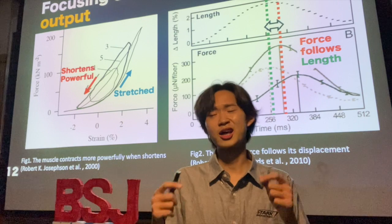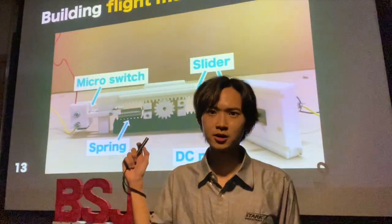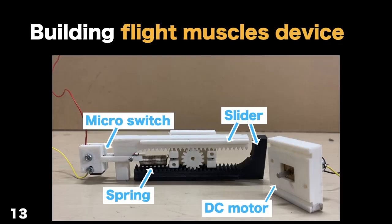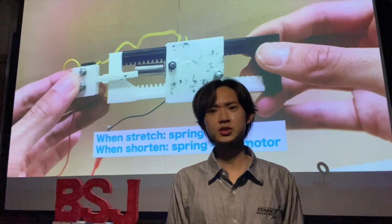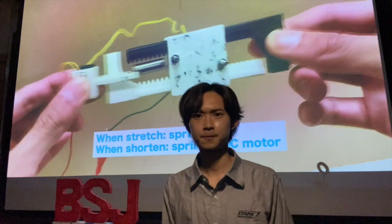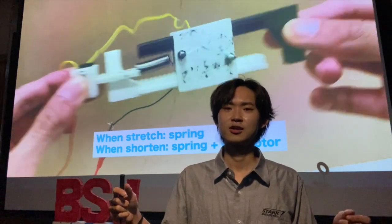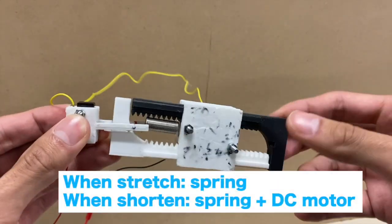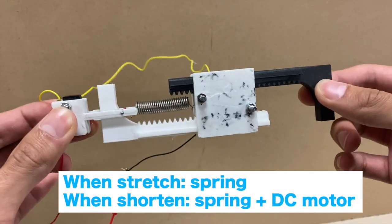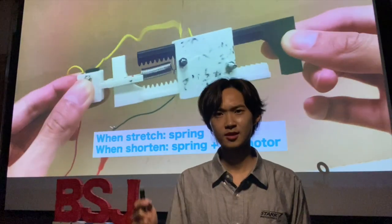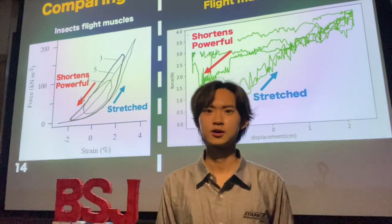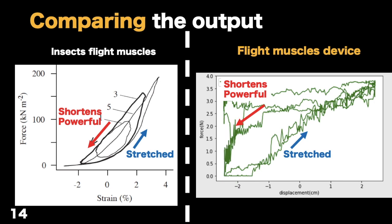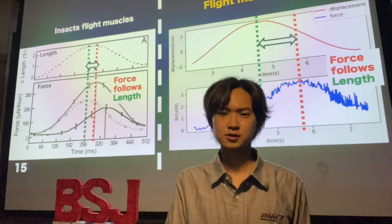We tried to build an actuator with that output, and here is the actuator made of those components. Essentially this is a spring — just a spring — but when it is shortened, a motor is turned on and strengthens the contraction force. Here is the output of this device: you can see it is similar — when it is stretched the force goes up, and more powerfully it contracts. The muscle force flow versus displacement is also reproduced.